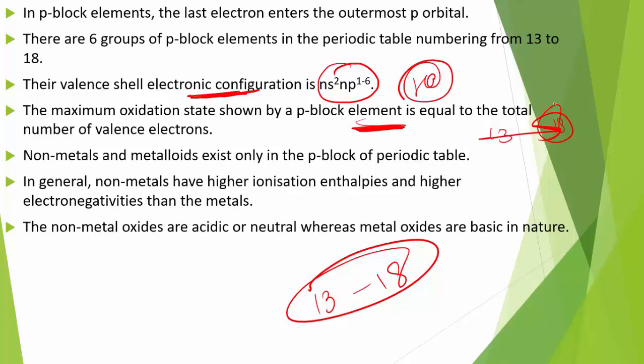The relative stability of two oxidation states — the group oxidation state and two units less — can vary across each group. The non-metallic character of elements decreases down the group. This change from non-metallic to metallic character brings diversity in the chemistry of these elements.